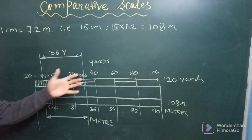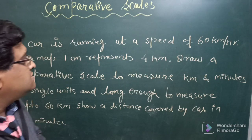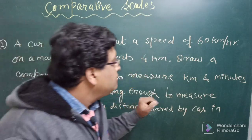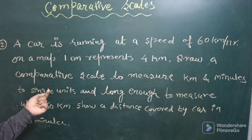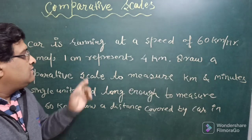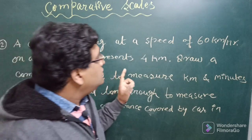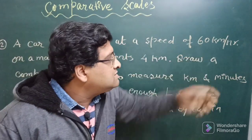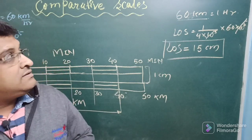Now here is another problem: a car is running at a speed of 60 kilometers per hour. On a map, 1 centimeter represents 4 kilometers — this is the RF. Draw a comparative scale to compare minutes and kilometers, measuring up to 1 kilometer and 1 minute, and long enough to measure up to 60 kilometers. Show the distance covered by the car in 40 minutes. From this data the RF is 1 by 4 lakh (1:400,000), and we use the 60 km/hr relationship to correlate time and distance.